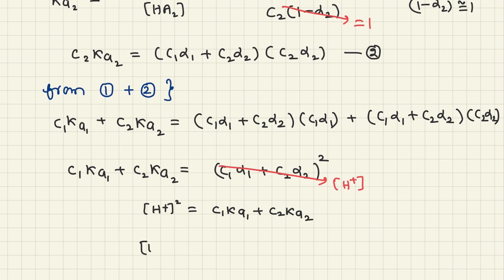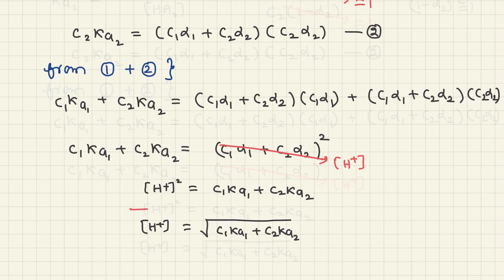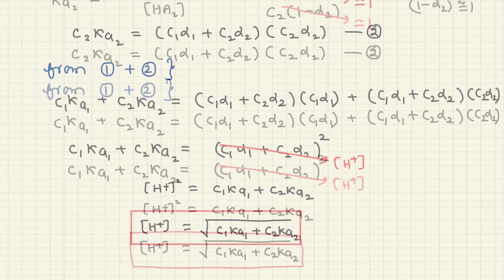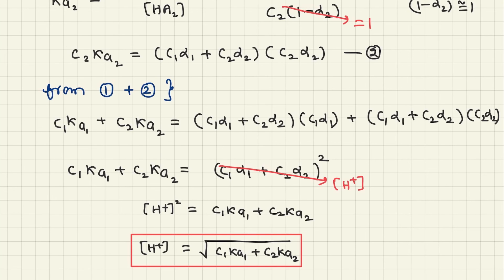From this, the concentration of H+ equals the square root of (C1·Ka1 + C2·Ka2). This is the H+ concentration for a mixture of two weak acids. After knowing the value of [H+], substituting this value in the regular pH equation — that is pH = −log[H+] — you will get the value of pH.